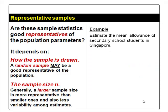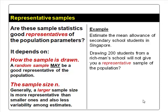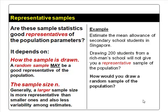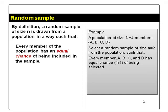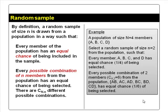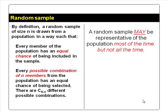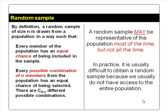For example, how would you draw a random sample to estimate the mean allowance of secondary school pupils in Singapore? Drawing 200 pupils from a rich school will not give you a representative sample. By definition, a random sample of size n is drawn from the population such that every member of the population has an equal chance of being included, or every possible combination of n members has an equal chance of being selected. However, a random sample may be representative most of the time but not all the time. In practice, it is difficult to draw a random sample because we often do not have access to the entire population.